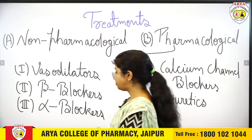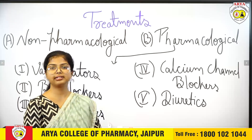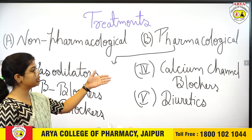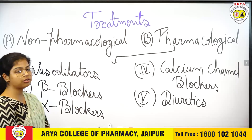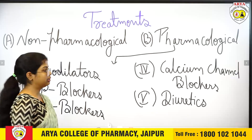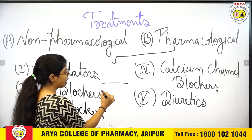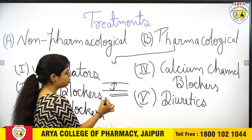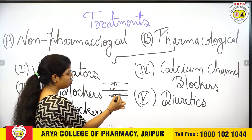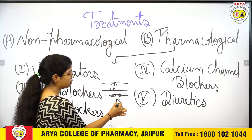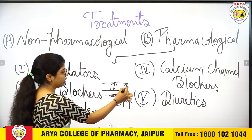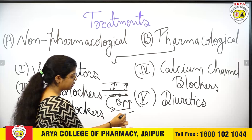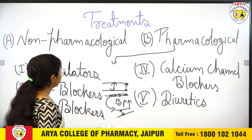In pharmacological treatment, we use medicines such as vasodilators, beta blockers, alpha blockers, calcium channel blockers, and diuretics. Vasodilators dilate the blood vessels. Since blood pressure builds up on artery walls when arteries constrict and narrow, vasodilators work to dilate those constricted vessels and bring them back to normal condition.